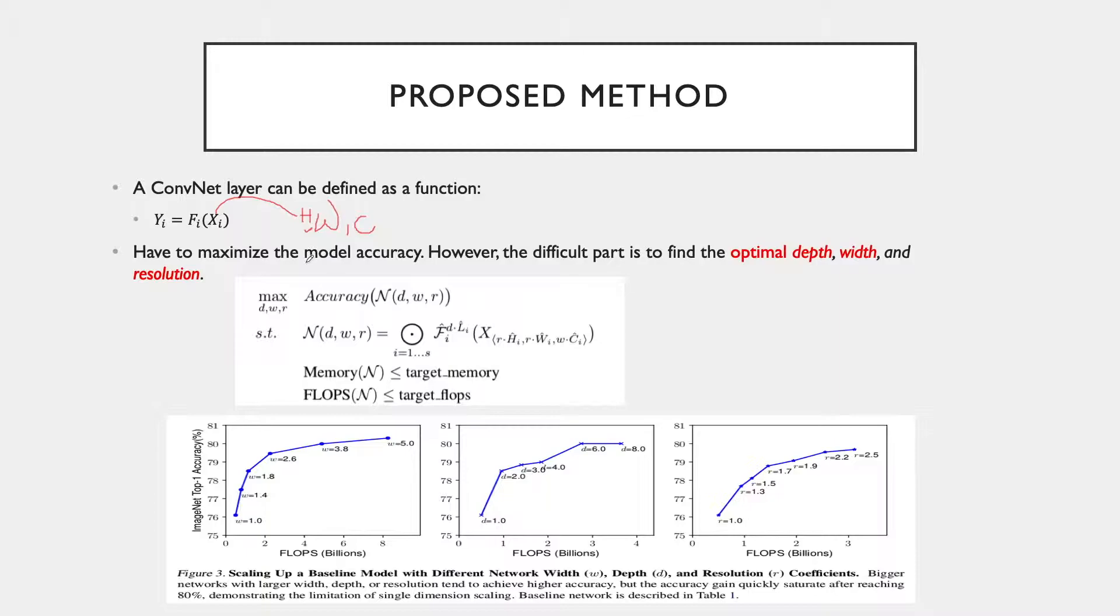Under the resource constraint of depth, width, and resolution, we have to identify and find ways to maximize the accuracy of the model. The main difficulty is that these three dimensions H, W, and C are highly dependent on each other, and the values change under different resource constraints.